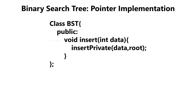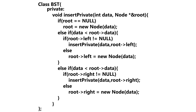Here we have our insert method, which is going to take in the data that we want to insert within our tree. From here, we're going to call another method called insert_private and pass in our data as well as our root pointer. If we look at our insert_private method, we're passing in the root pointer by reference, so we're working with the original and not a copy.